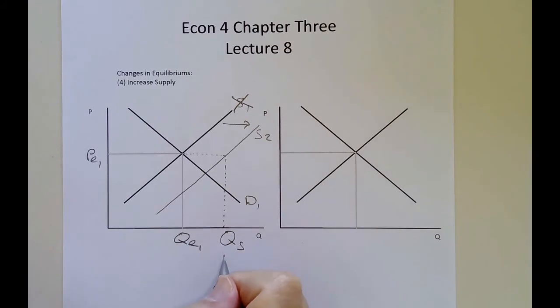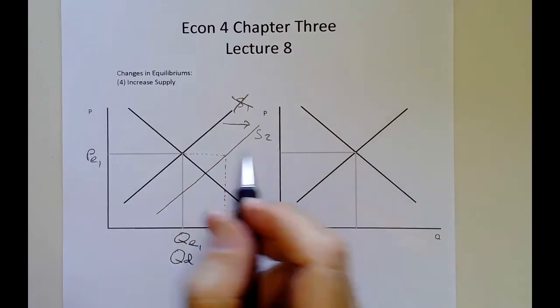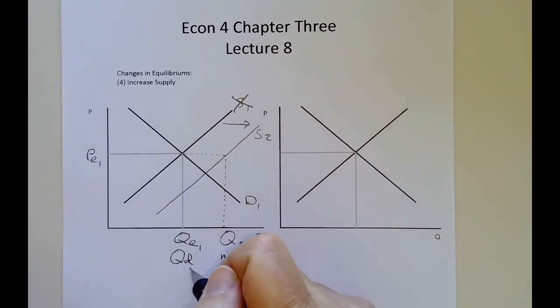So now the new quantity supplied is here. Customers are still here. The quantity demanded is still there. Nothing's happened to us, and so we're still buying QD amount, which was the old equilibrium QE1, but now they're selling a lot more. What do we have? We have a surplus.